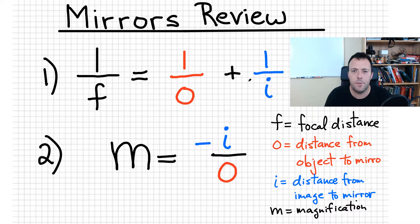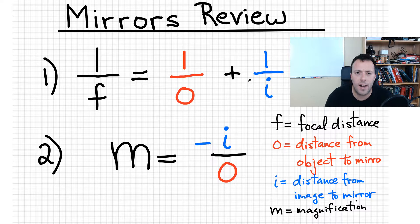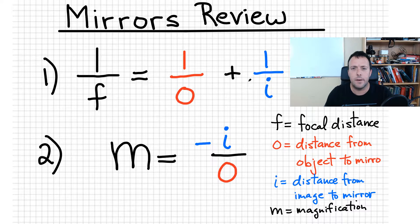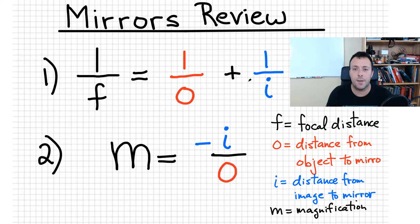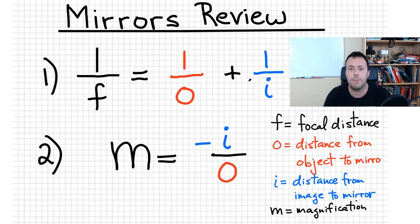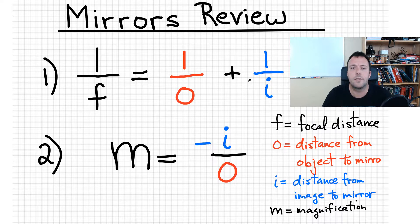Hi everyone, today I'm going to do a mirror review. I'm going to look at two equations. The first is 1 over F equals 1 over O plus 1 over I. F is the focal distance, O is the distance from the object to the mirror, and I is the distance from the image to the mirror. The next equation gives you the magnification M — how much bigger or smaller the image is with respect to the object.